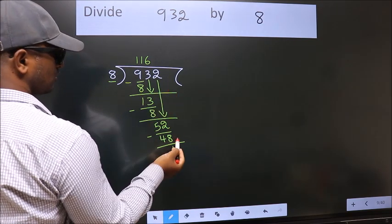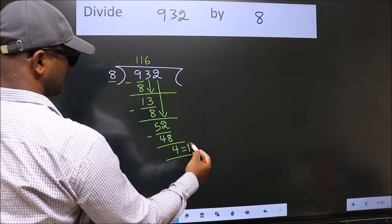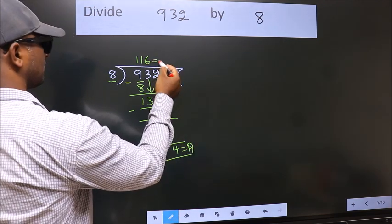No more numbers to bring down. So we stop here. This is our remainder. This is our quotient.